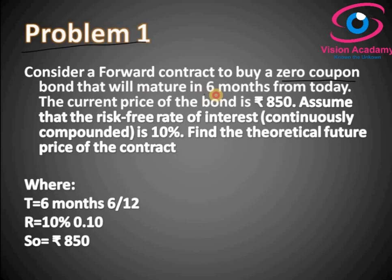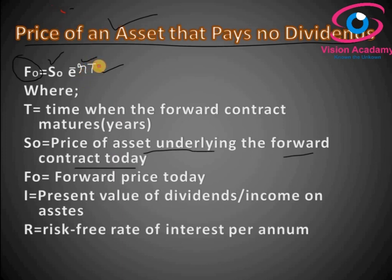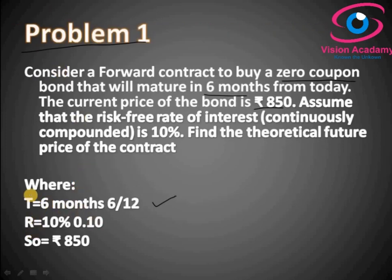The contract will mature in 6 months from today. The current price of the bond is 850 rupees. Assume the risk-free rate of interest is 10%. Find the theoretical futures price of the contract. We need three details from the problem: T = 6 months (i.e., 6/12), R = 10% = 0.10, and S0 = 850 rupees — the contracted price today.